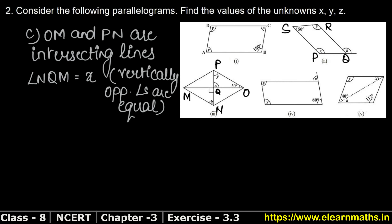Now NQM — how much is it? It is 90 degrees, since the triangle makes a 90 degree angle at the intersection. So x equals 90 degrees. X has been found.